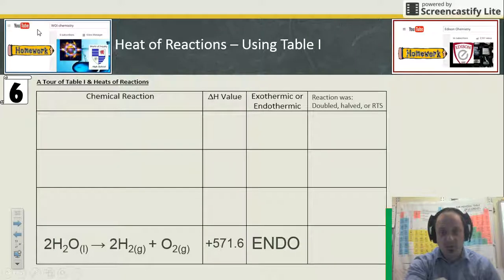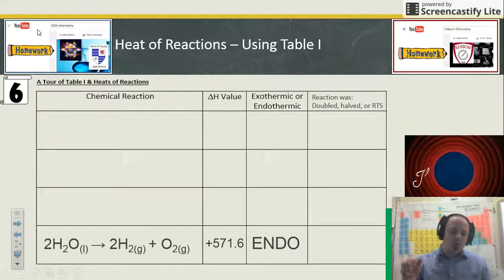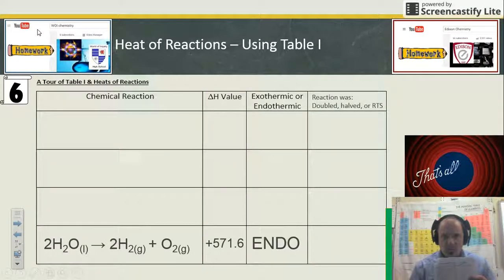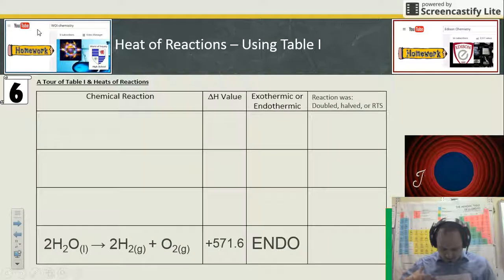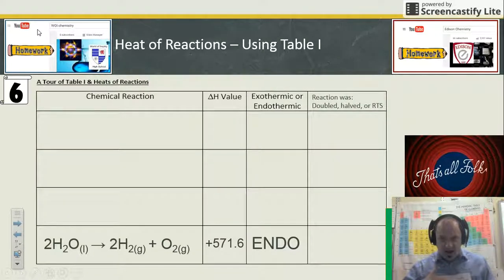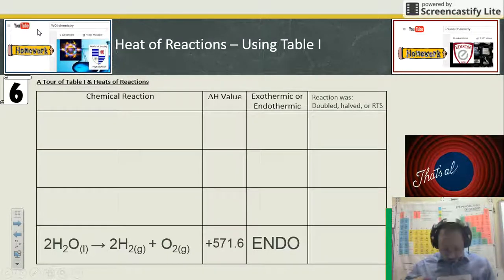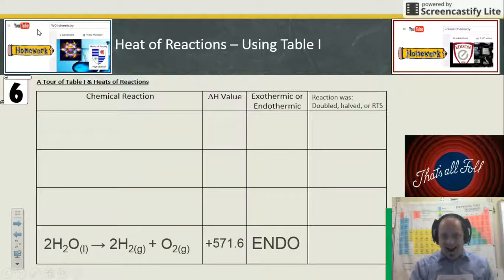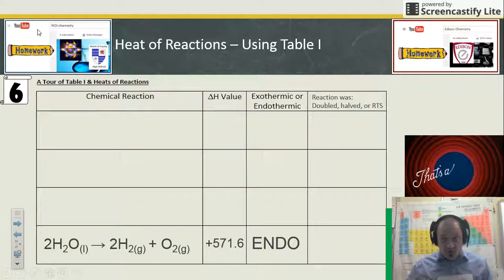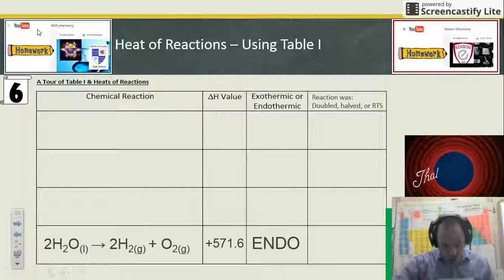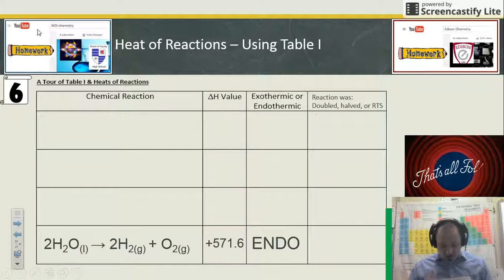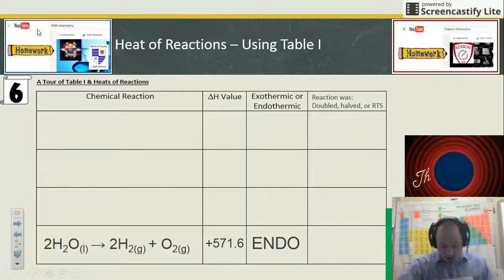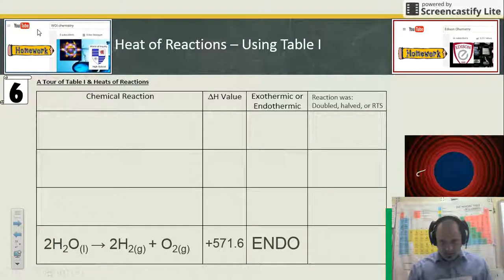The main points of this lesson: heat is a product or reactant. Table I tells you that if the value for the heat is negative, heat was produced. If the value for the heat was positive, heat was consumed as a reactant in the ingredients. You can double these reactions, triple these reactions, or flip these reactions. When you double or triple the reaction, you double or triple or halve the amount of heat. When you flip the reaction, you flip the sign for the heat.